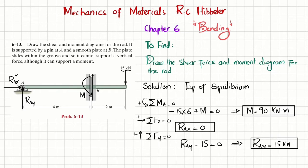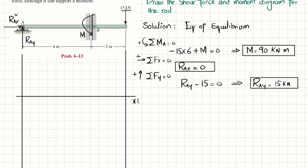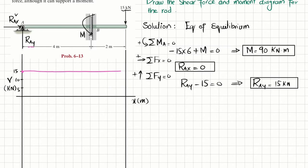Now we draw the shear force and bending moment diagram for the beam. I draw vertical lines at the ends of the beam and a horizontal line showing the length x in meters. On the y-axis, shear force is in kilonewtons — let each division equal 5 kilonewtons, so 5, 10, and 15. At point A we have RAy = 15 kilonewtons acting upward, so this is the first point. There is no other vertical force, so shear remains constant at 15 kN until the end, where the 15 kN load brings it down. This is the shear force diagram.